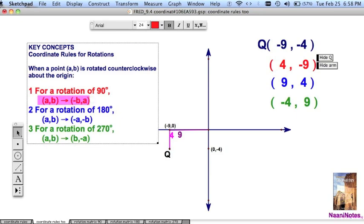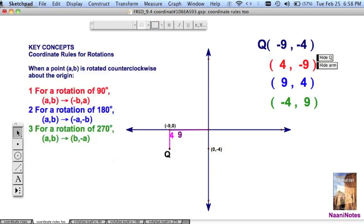Look at the rule, for example, here. A, B maps to negative B, A. Well, negative nine, negative four maps to four. That's a positive four, negative nine. I want you to read that A, B maps to the opposite of B, comma A. In this case, the opposite of a negative is positive. Okay, enough of that. Matrix time.